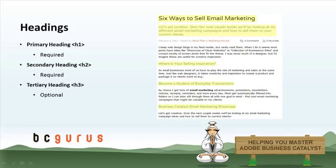You can see in our example here, the H1 is 'six ways to sell email marketing' — our keyword here is email marketing, so it's included in the H1. Below that we've got our H2, which is the sub headline, and you can see email marketing campaigns included there as well. And down at the very bottom of the screenshot, you can see email marketing in the H3 within the content area.